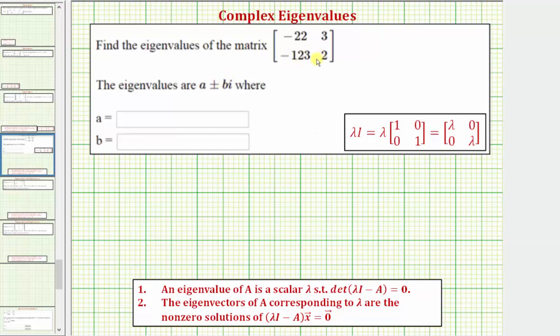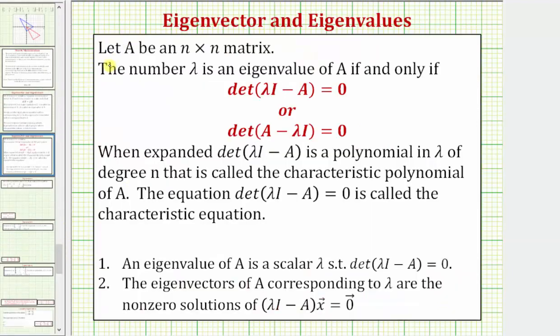We're going to find the eigenvalues of the given two-by-two matrix. If we let A be an n-by-n matrix, then the number lambda is an eigenvalue of A if and only if the determinant of lambda times the identity matrix minus A equals zero, or equivalently, the determinant of A minus lambda I equals zero.